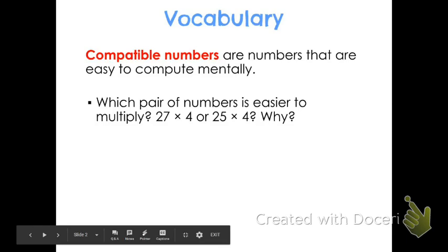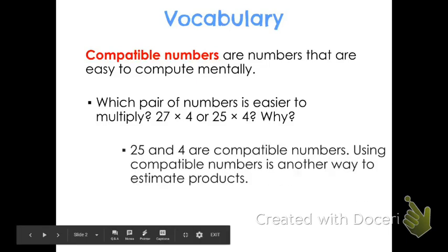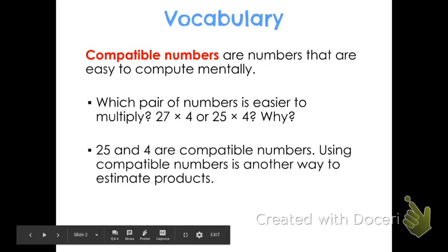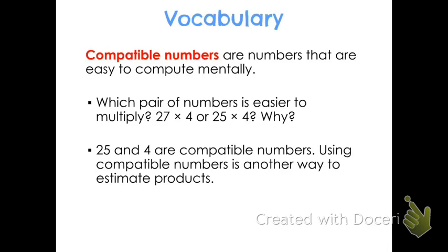Which pair of numbers is easier to multiply, 27 × 4 or 25 × 4, and why? 25 and 4 are compatible numbers. Using compatible numbers is another way to estimate products.